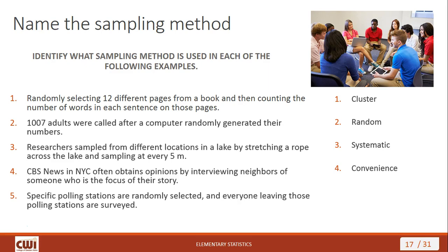Last example: specific polling stations are randomly selected, and everyone leaving those polling stations is surveyed. This is another example of cluster sampling. Each polling station represents a different group or cluster. You randomly select the clusters, and then take everything in the ones you randomly select — everyone leaving those polling stations is surveyed.